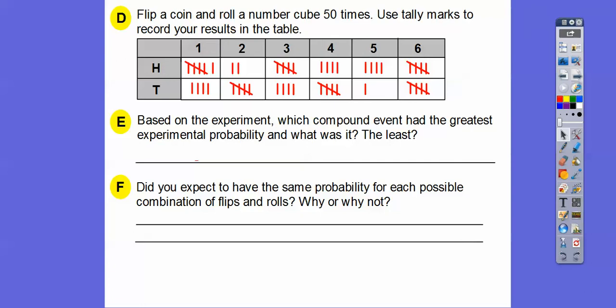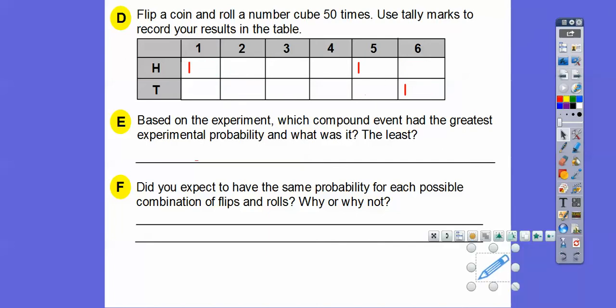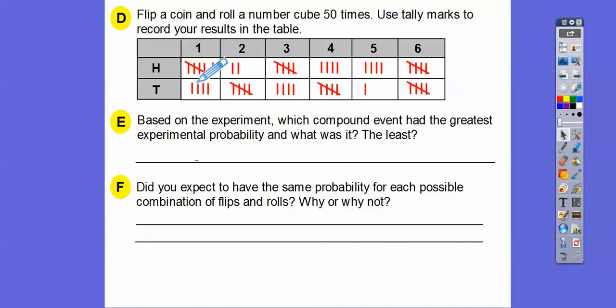Based on this experiment, there's 50 of them. There's 50 tick marks. As long as you guys know that there's 50 tick marks. If you were in my class, this would represent five. So here's four and here's the fifth one. The reason why you do that is it's easy to count by five. So here's five, ten, fifteen, twenty, twenty-five, thirty. Based on the experiment, which compound event had the greatest experimental probability? And what was it? It looks like this one has the most. How about the least right here? Definitely this one had the least. So heads and a one, and then tails and a five are my greatest and my least right there.